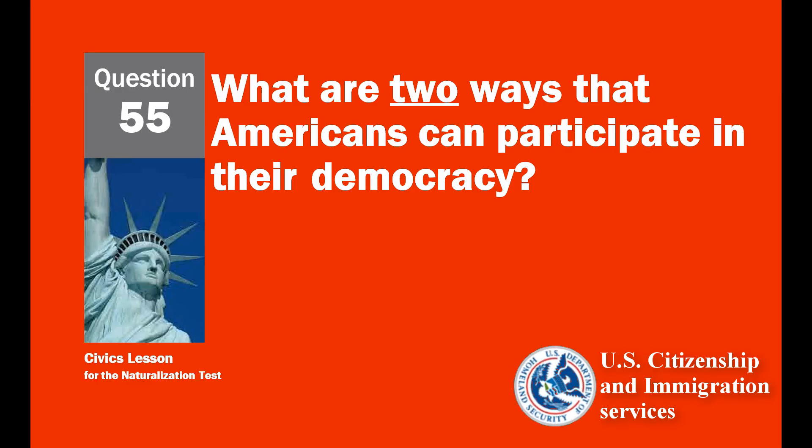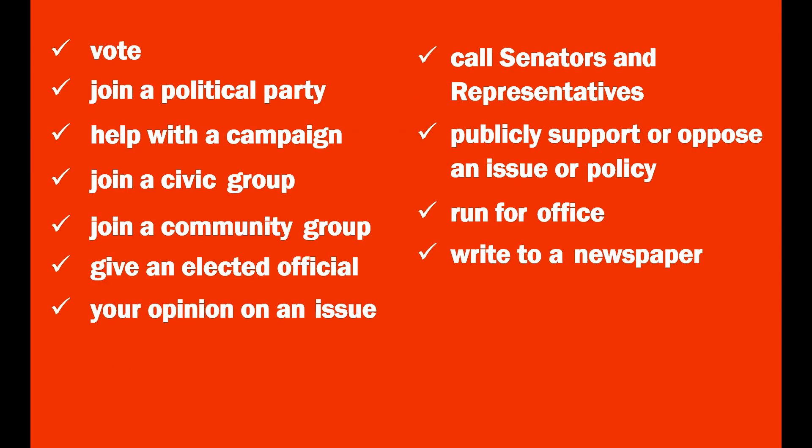What are two ways that Americans can participate in their democracy? Vote. Join a political party. Help with a campaign. Join a civic group. Join a community group. Give an elected official your opinion on an issue. Call senators and representatives.